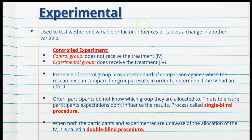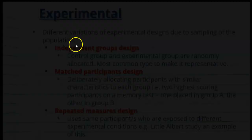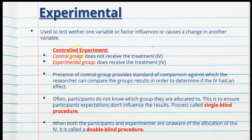Whenever we use an experimental design, it's used to test whether one variable or factor influences or causes a change in another variable. In a controlled experiment — the independent groups design — the control group does not receive the treatment or the IV, and the experimental group does. The presence of the control group is just as important as the experimental group because it provides a standard of comparison, allowing the researcher to determine if the IV has actually had an effect. Without a control group, we have nothing to compare the results to.